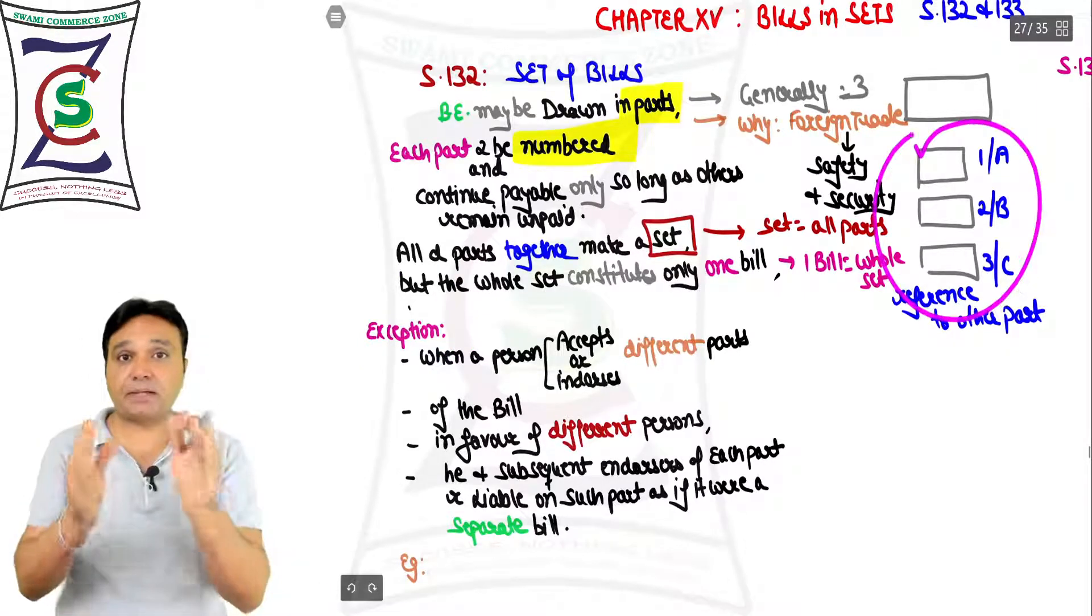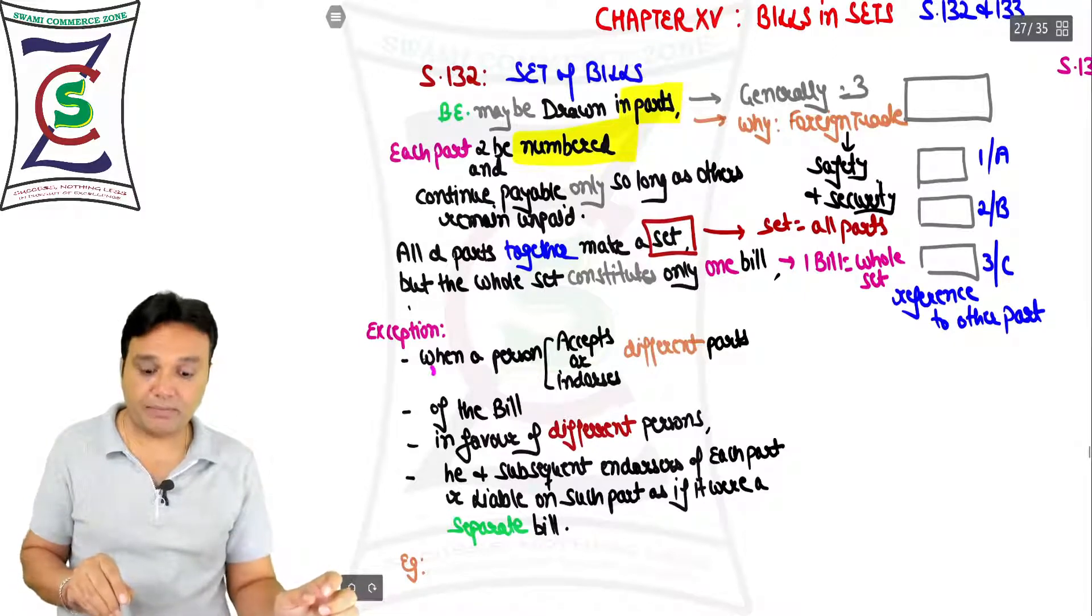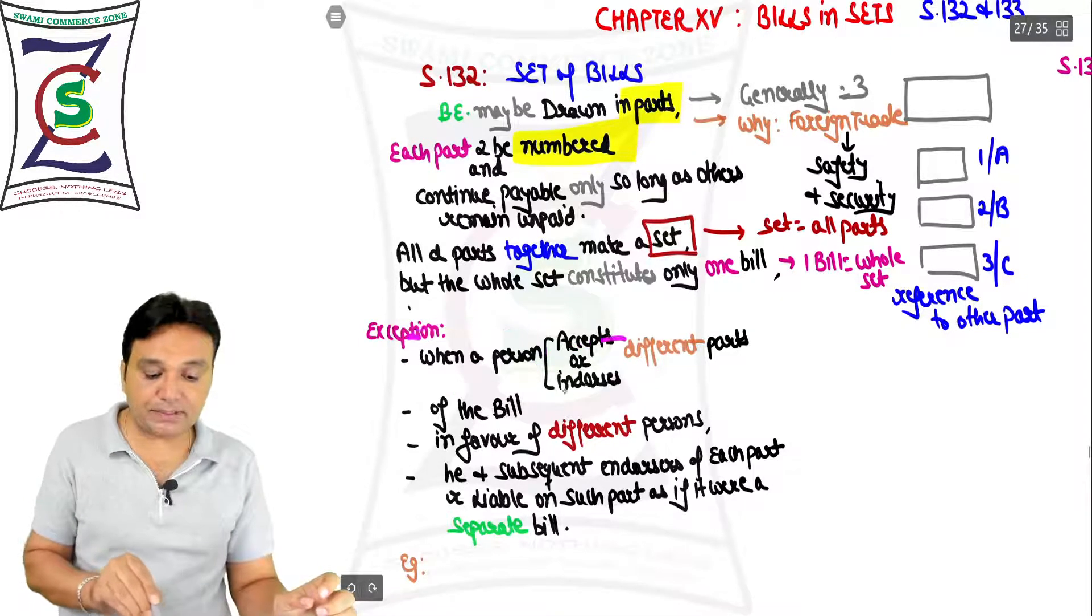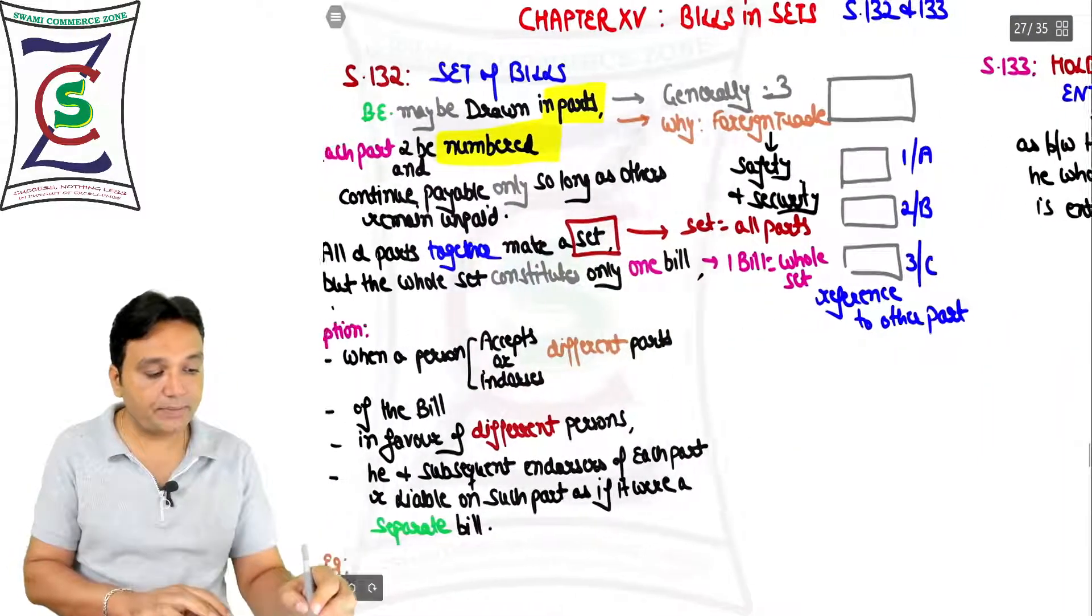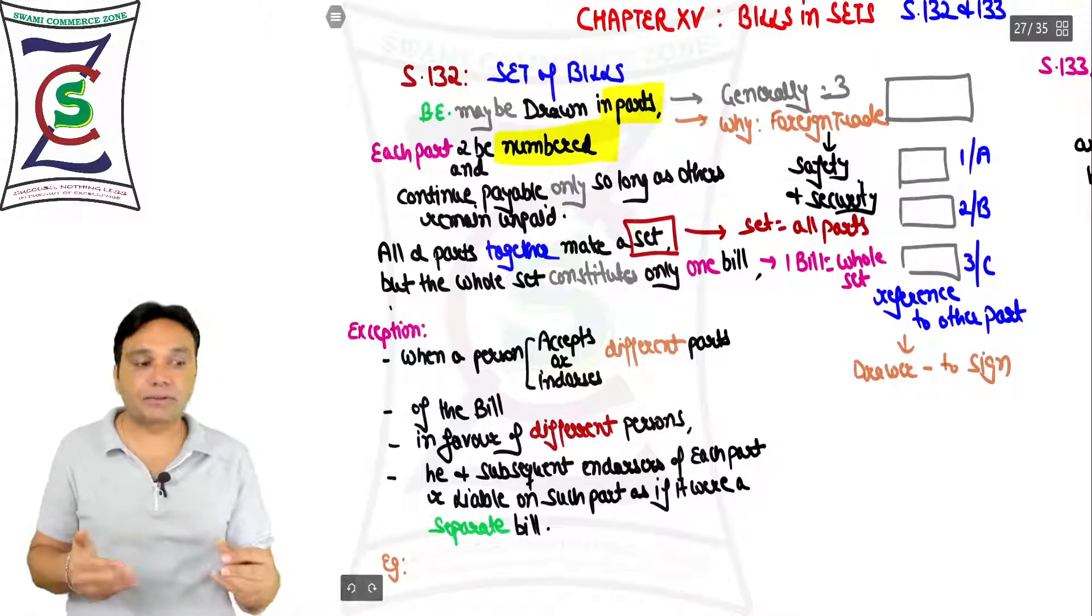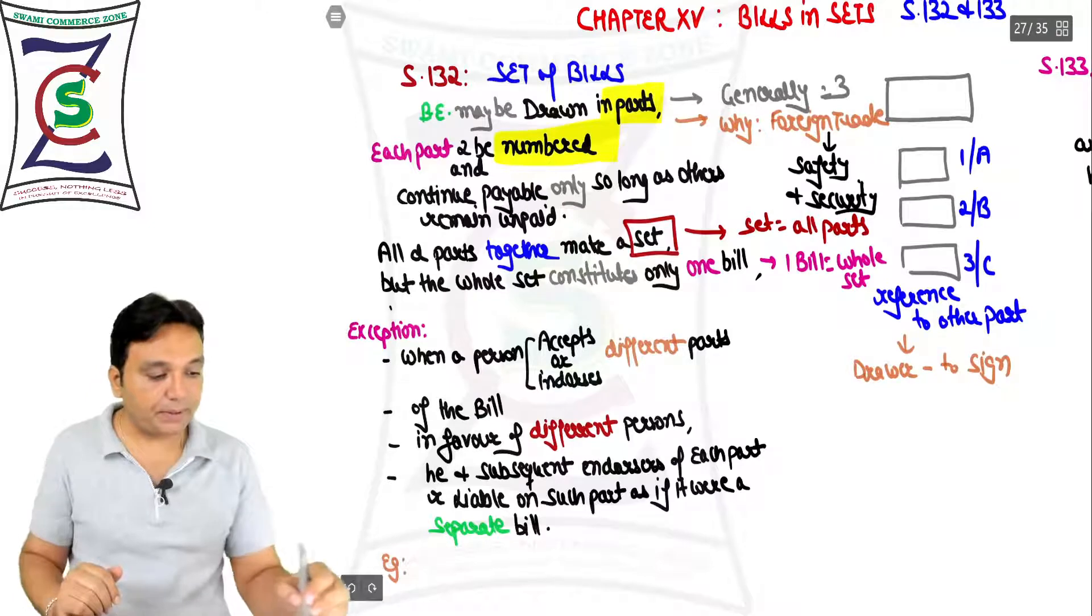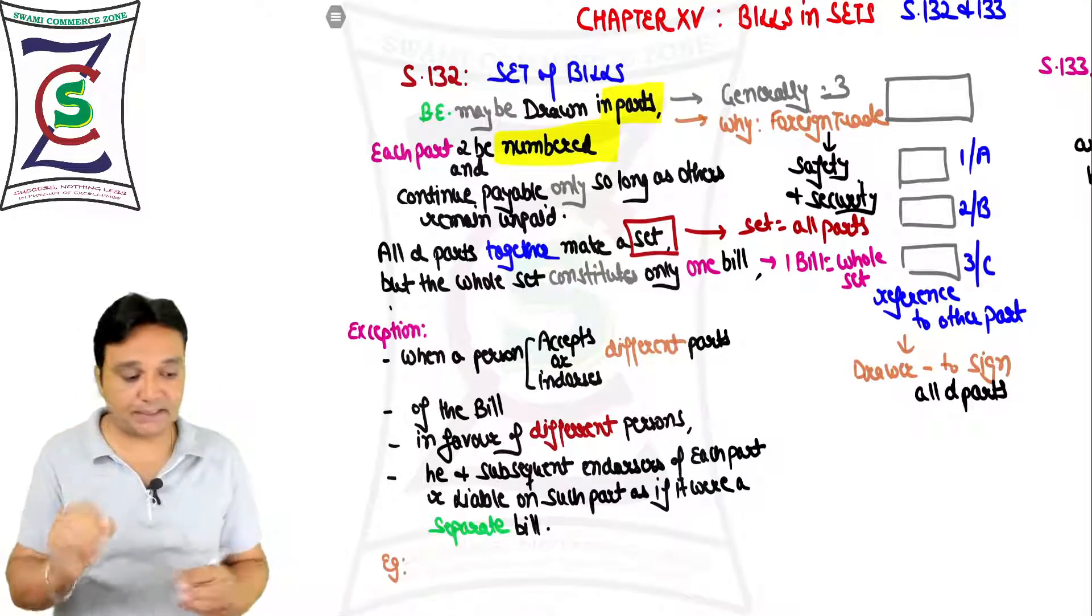There is an exception. All these three parts may be treated as three different bills. That is going to happen when a person accepts or endorses different parts. See, the drawer, when making the bill, has to sign - who's making the bill? It is the drawer. So he will sign all the parts.